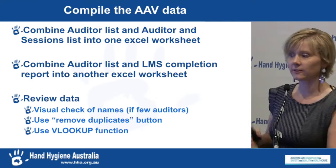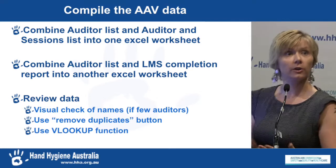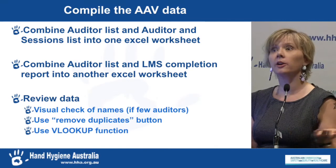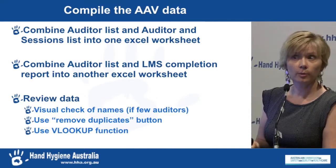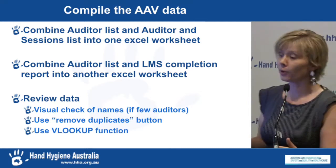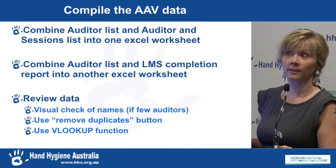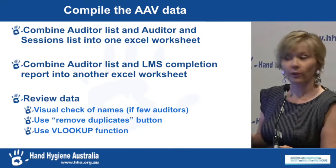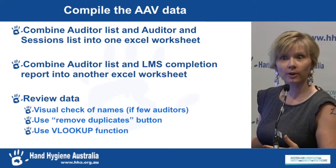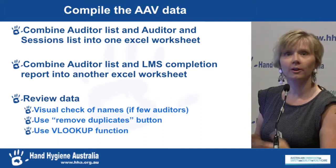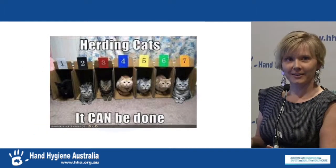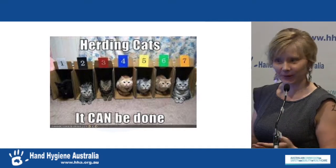Now you've got your auditor list and auditor and sessions report and can see whether everyone's done 100 moments. You've got your auditor list and LMS report and can see whether everyone's done their online learning module. Put them all together in one list — if you don't have many auditors it's easy to do a visual check. If you've got lots of auditors, you might want to use the remove duplicates button or the VLOOKUP function to see who's completed everything they need to. We can get them there; it just takes a little bit of work.